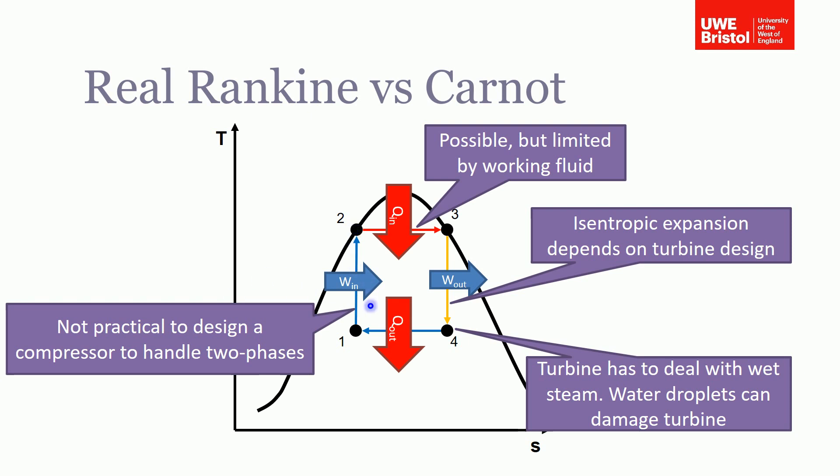Additionally, from the other side, it's a lot harder to design a pump that can handle two phases. You can see at state one we've got vapor and liquid - much easier to just do it when we've got pure liquid and we're just pumping that up to go into the boiler. So there's a number of reasons here why the Carnot cycle isn't suitable for this type of application.